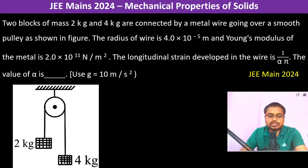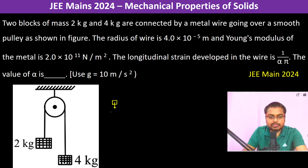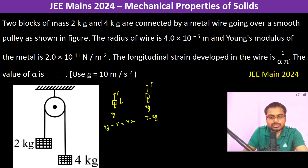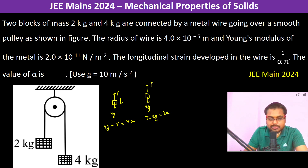Longitudinal stress-strain developed in the wire. We have a sample with 4g mass, so 4g minus T is equal to 4a. Then for the 2kg mass, 2g, we have T minus 2g is equal to 2a. Adding both equations, 2g equals 6a.